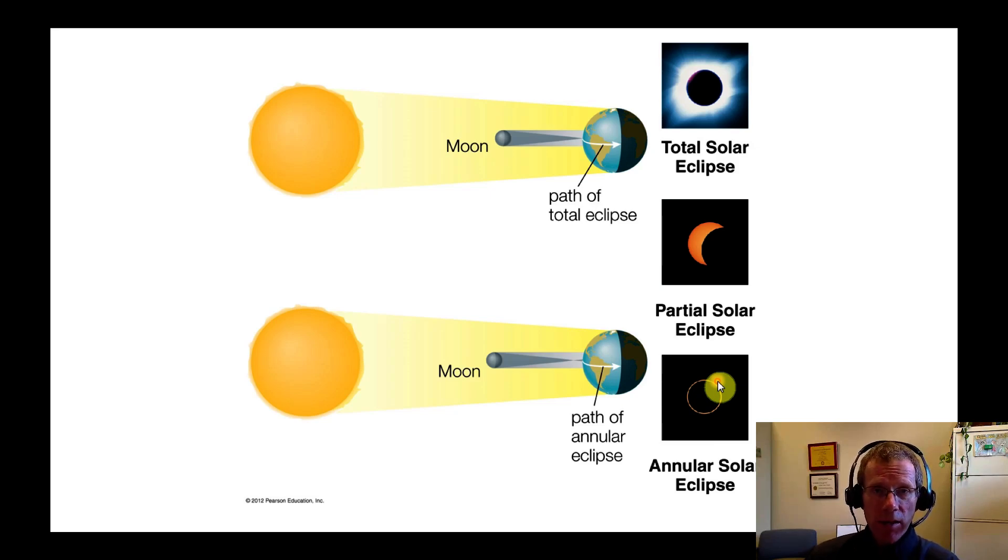So not annular because it comes by the year, but annular based on the Latin word for ring. This is sort of like a tree ring, an annulus. So that's the annular solar eclipse.